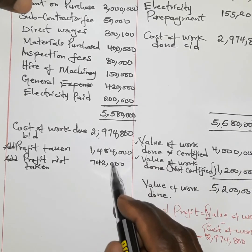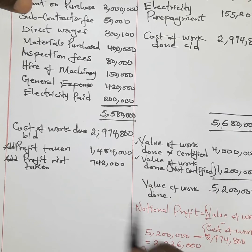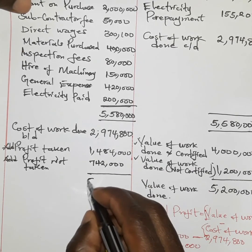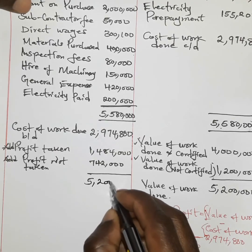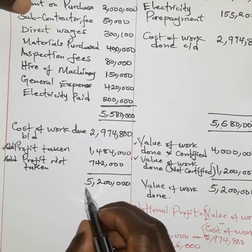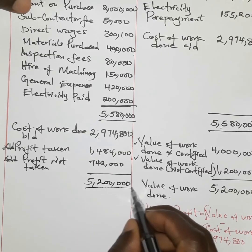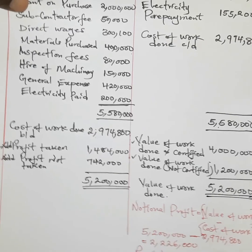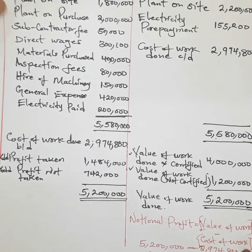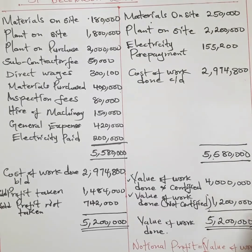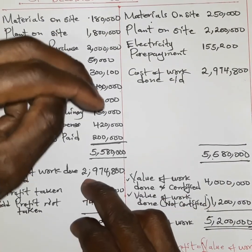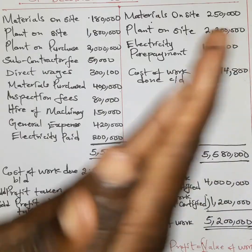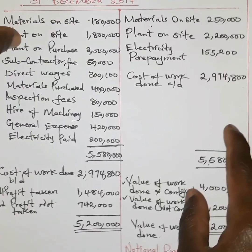When we add the three credit values — cost of work done, profit taken, and profit not taken — we get 5.2 million, confirming the account balances. We double underline to finalize. The contractor made a notional profit of 2,226,000. I hope you enjoyed the session.